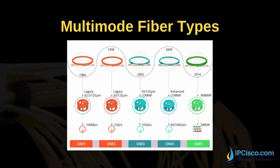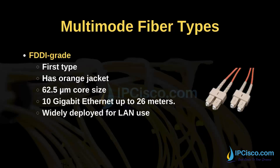FDDI grade is the first type. It has an orange jacket. The core size of this cable is 62.5 micrometers. It supports 10 gigabit ethernet up to 26 meters. It is widely deployed for LAN use. It is a very old cable type and the physical view of this cable is also different.